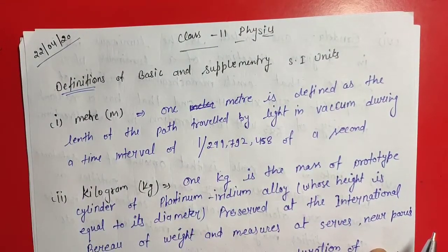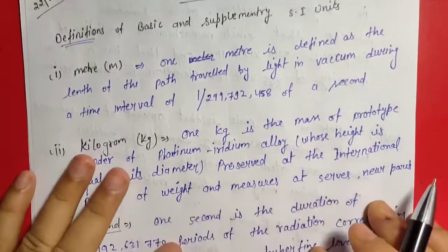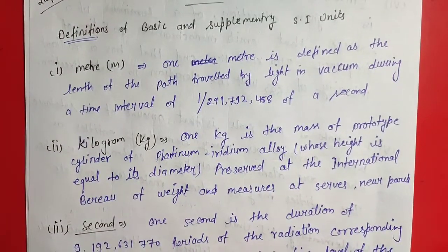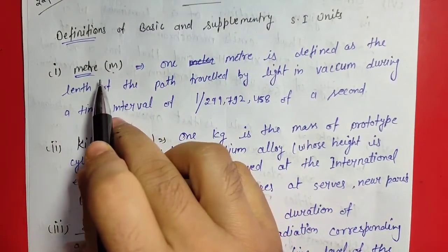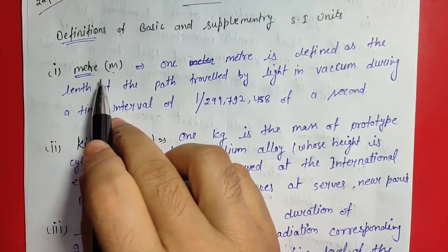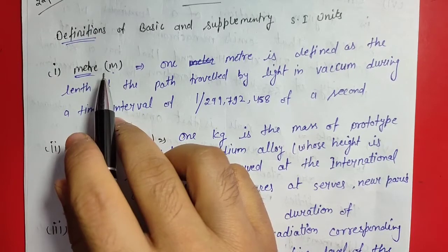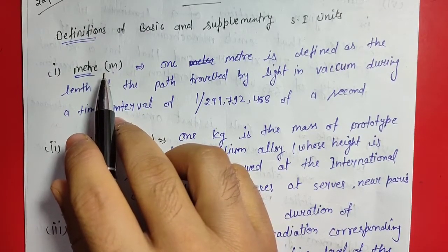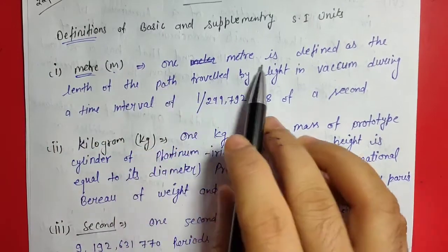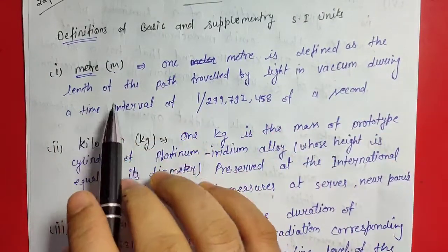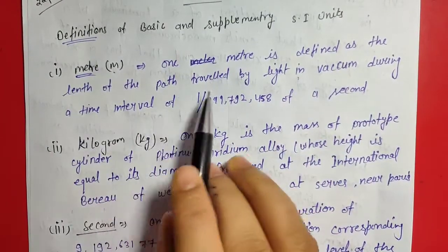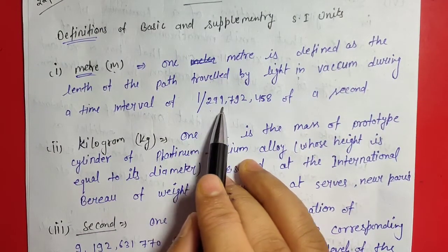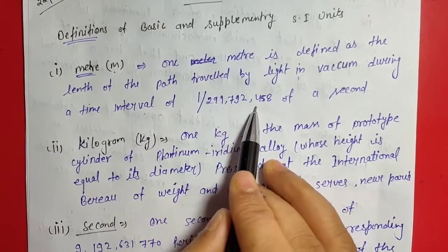First of all, we define one meter. Meter is basically a unit of length. One meter is defined as the length of path travelled by light in vacuum during the time interval of 1 by 299,792,458 of a second.